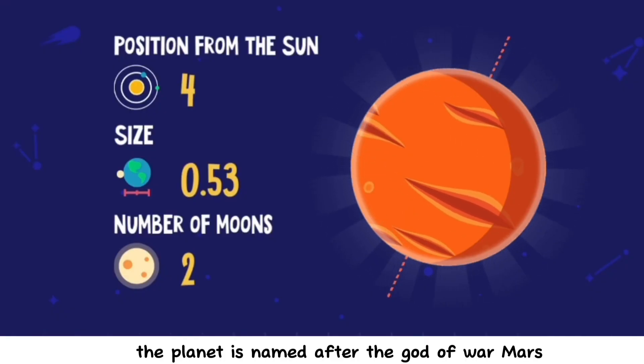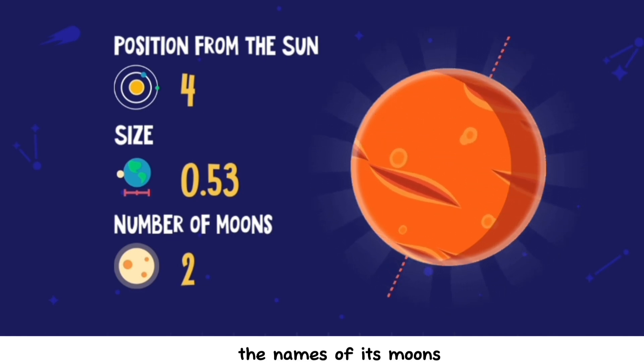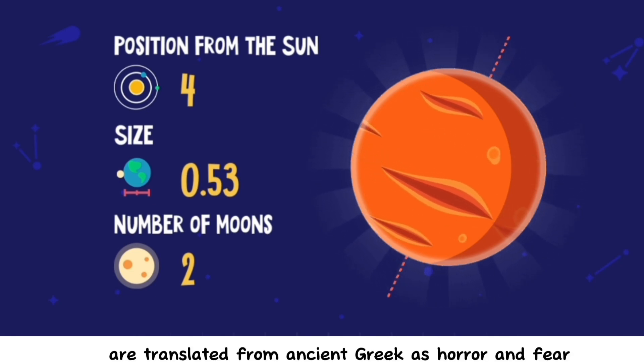The planet is named after the god of war, Mars. The names of its moons are translated from ancient Greek as horror and fear.